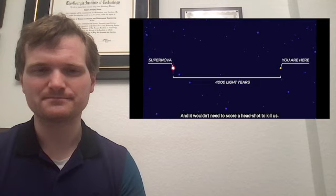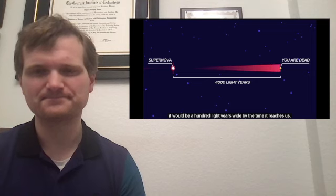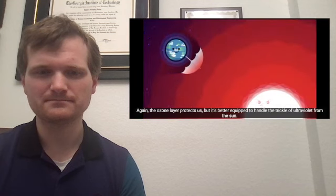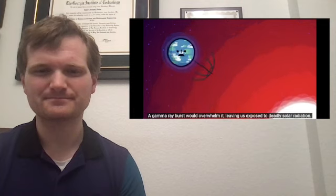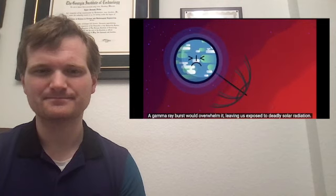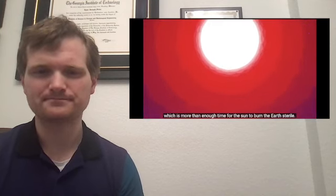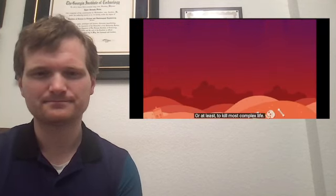And it wouldn't need to score a headshot to kill us. If originating from a few thousand light years away, it would be a hundred light years wide by the time it reaches us, washing over the solar system like a tidal wave. Again, the ozone layer protects us, but it's better equipped to handle the trickle of ultraviolet from the Sun. A gamma ray burst would overwhelm it, leaving us exposed to deadly solar radiation. Ozone takes years to replenish itself by natural processes, which is more than enough time for the Sun to burn the Earth sterile. Or at least, to kill most complex life.